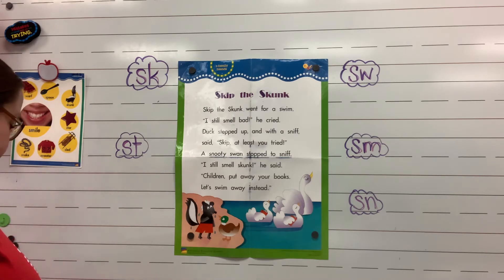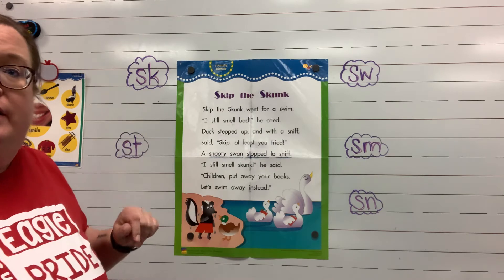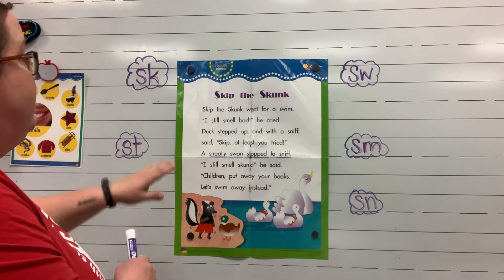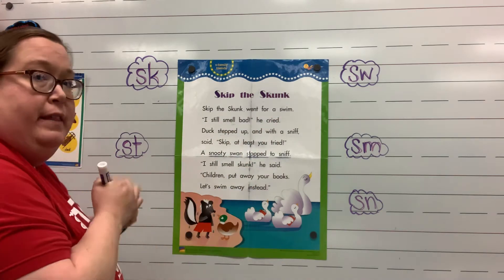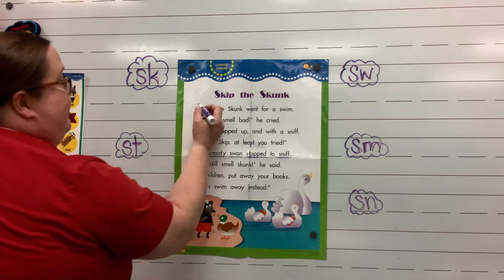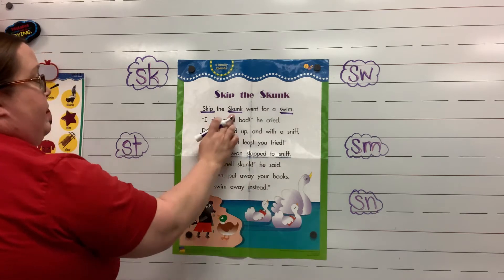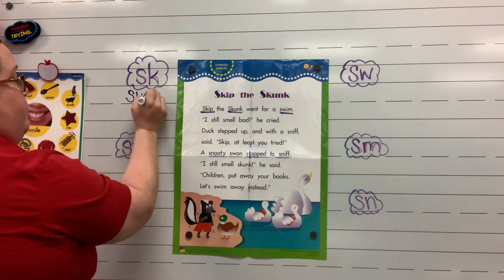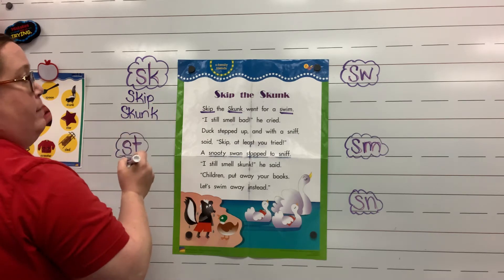All right. Let's read it again and circle the S-Family Blends, then write them on our list. Skip the Skunk — Skip the Skunk went for a swim. Did you hear any S-Family Blends? We have S-K in Skip and Skunk, and S-W in swim. So I'll write those up here.